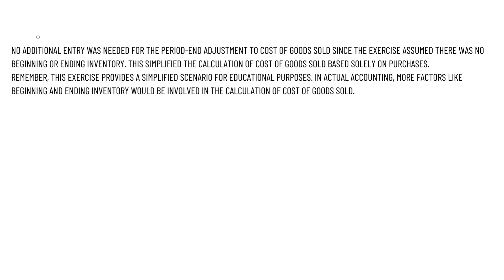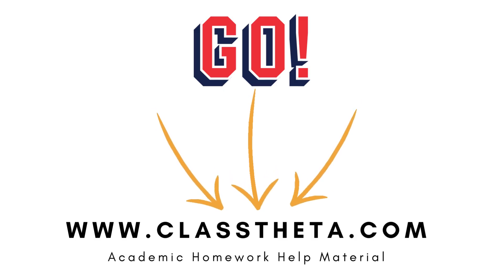For Part B, no additional entry was needed for the period-end adjustment to cost of goods sold, since the exercise assumed that there was no beginning or ending inventory. This simplifies the calculation of cost of goods sold to purchases. Remember, the exercise provided a simplified scenario for educational purposes. In actual accounting, more factors like beginning and ending inventory would likely be involved in the calculation of cost of goods sold.